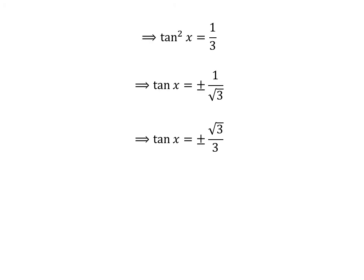Let us rationalize the denominator of every fraction. Multiplying the numerator and the denominator by a common factor does not change the value of the fraction. So, let us multiply the numerator and the denominator by square root of 3. We get tangent of x is equal to plus and minus square root of 3 upon 3.